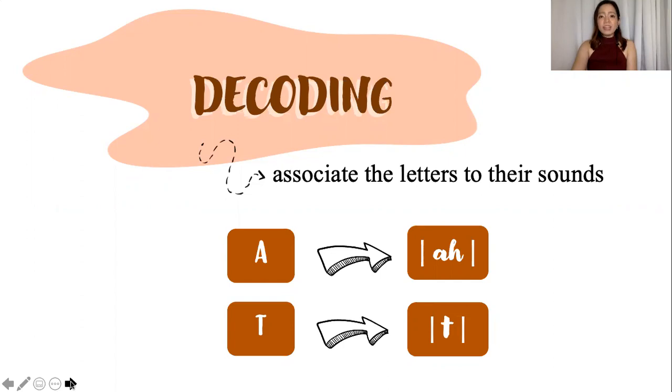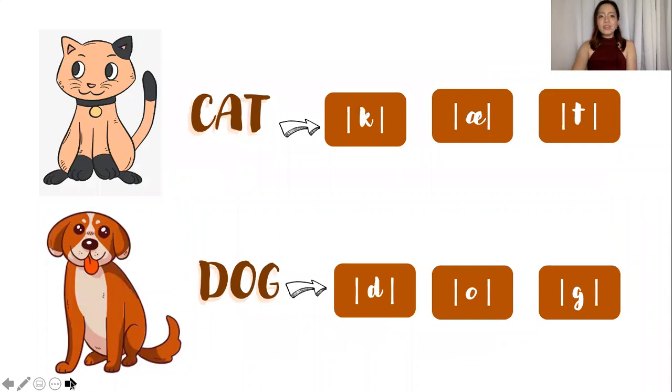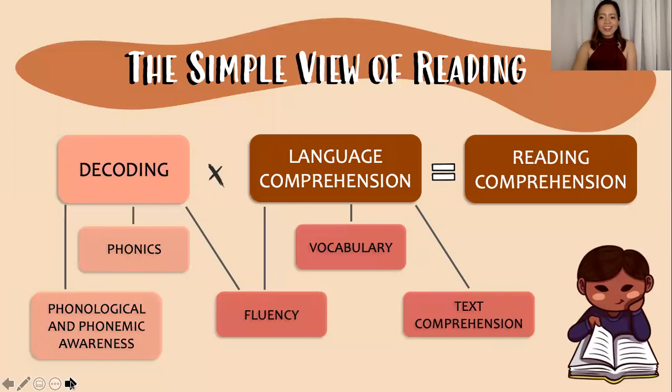Decoding is the ability to associate the letters to their sounds, including their lettering patterns to correctly pronounce written words. So, this begins when we understand that the letters we say have specific sounds, such as A for letter A and T for letter T. And these develop in forming words, such as cat, which is comprised of K, A, T, and dog, which is comprised of D, O, G.